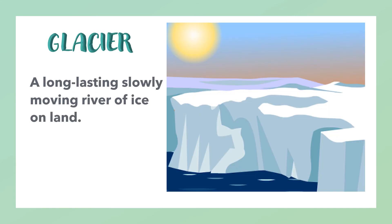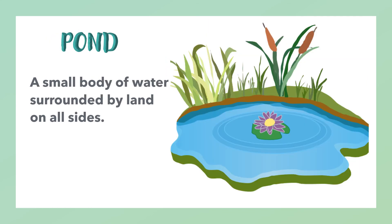Glacier: a long-lasting, slowly moving river of ice on land. Pond: a small body of water surrounded by land on all sides.